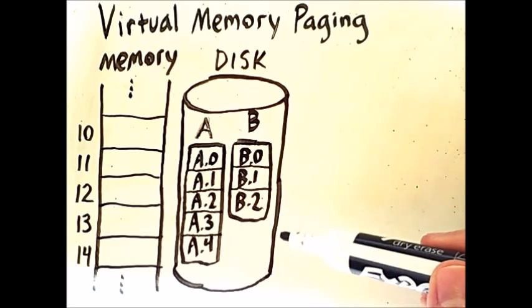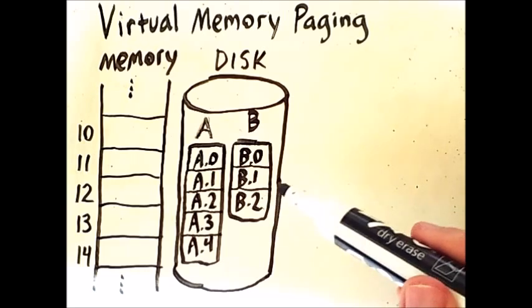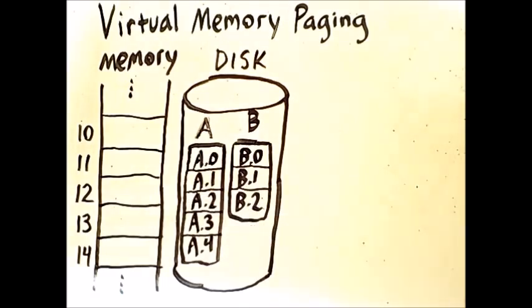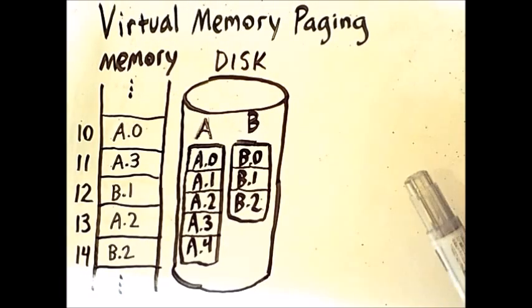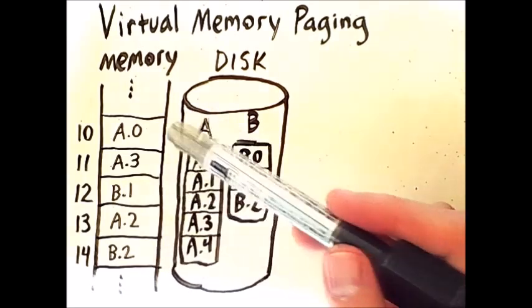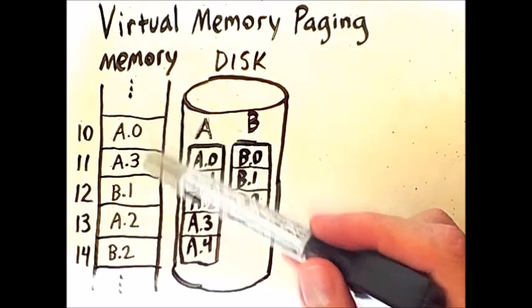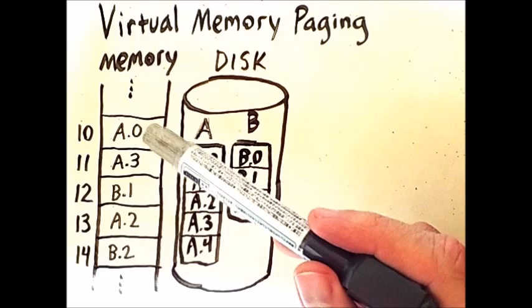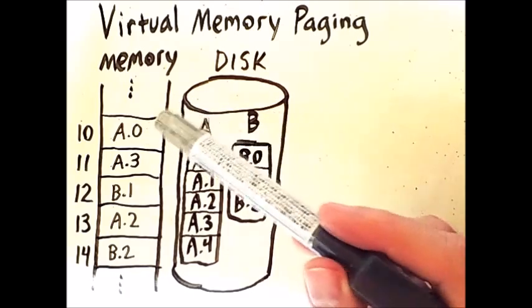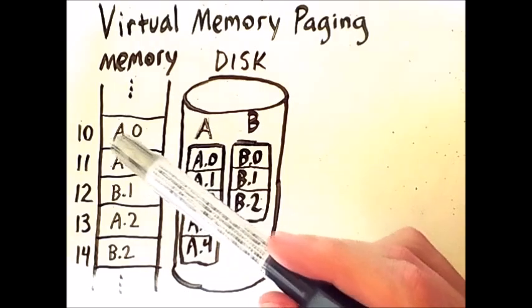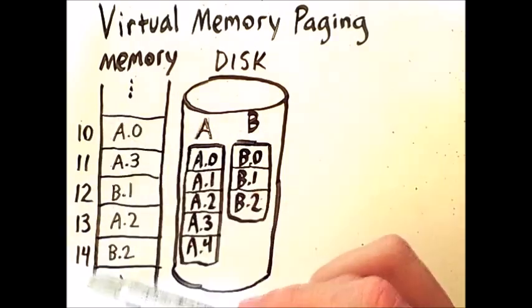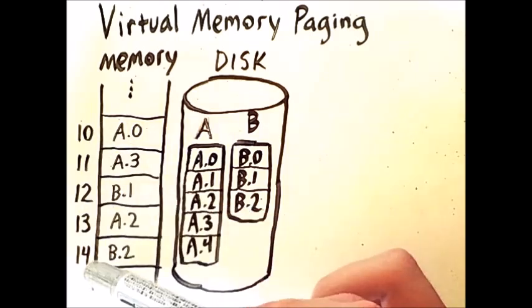I will now show how portions of these processes can be in memory while the entirety is on disk. Only a portion of memory is shown here, but we can assume for this example that the portions I am showing contain the entirety of the pages from processes A and B that are present in memory. On the left we see frame numbers. I have started in the middle of memory at frame 10 and go through frame 14.